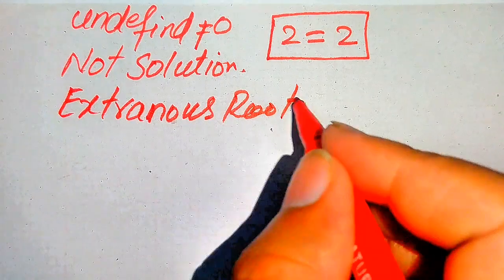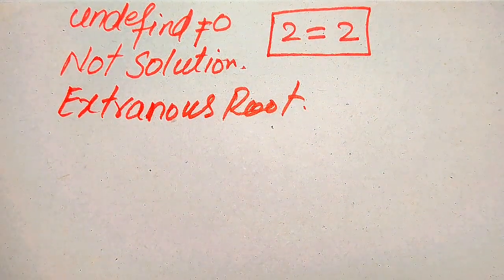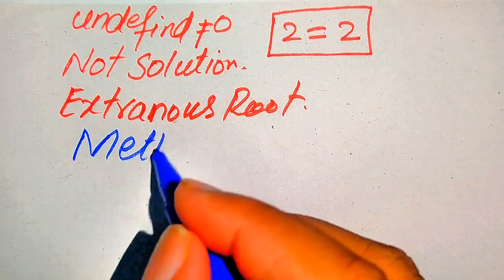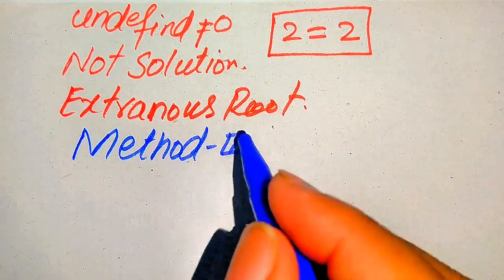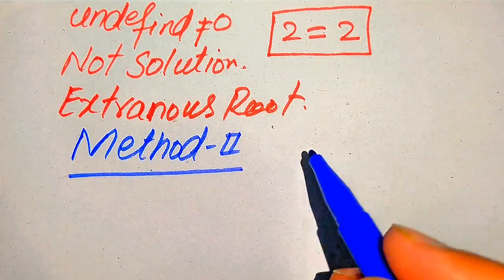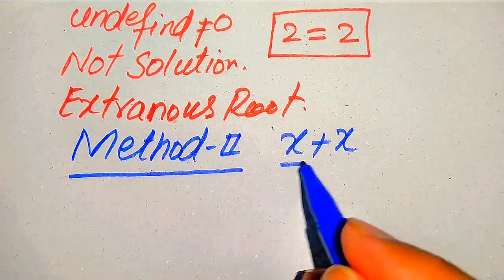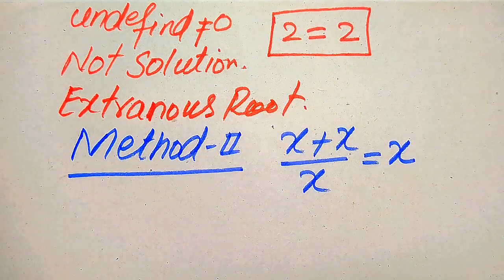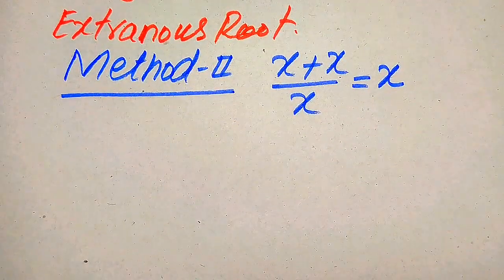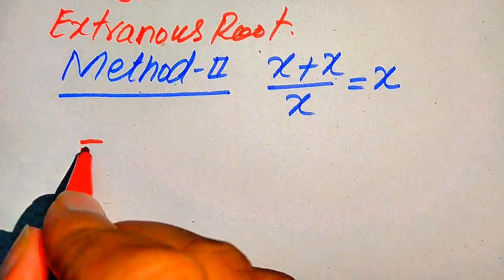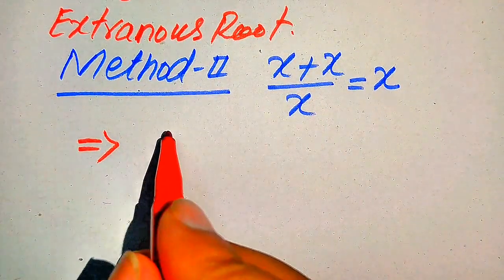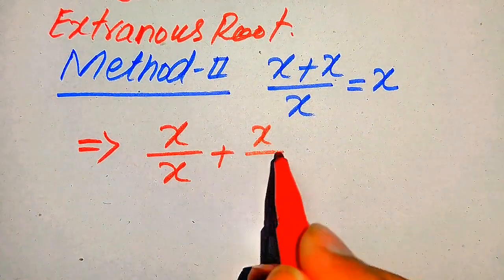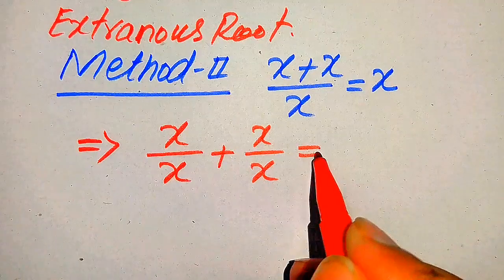Now we move forward to the second method. We again copy down the given equation: x plus x divided by x equals x. In the second method, we break this fraction — when we break the fraction, we get x over x plus x over x equals x.